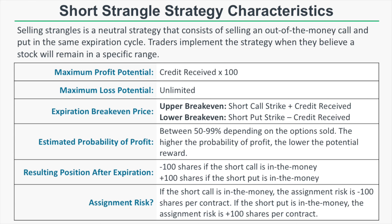After expiration, you can have a resulting stock position if one of your options is in the money. If your short call expires in the money, you'll be assigned negative 100 shares of stock per short call contract — essentially a short stock position. If your short put expires in the money, you'll be assigned 100 shares per short put contract, meaning you're buying 100 shares at the put's strike price. If a short option is deep in the money before expiration, there is also the potential to be assigned early.